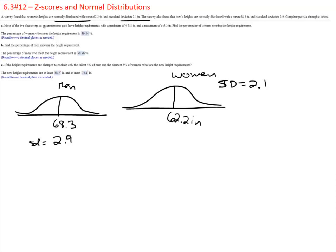Most of the live characters in an amusement park have height requirements with a minimum of 4 feet 8 inches and a maximum of 6 feet 3 inches, and they want you to find the percentage of women meeting that requirement. So they are basically saying where would those two values land on our distribution and therefore what percentage would be in between those two numbers.